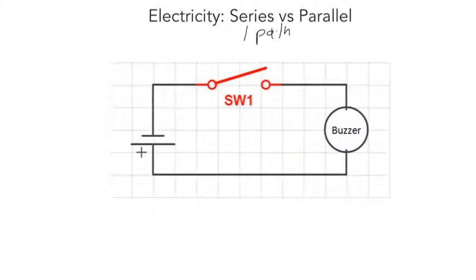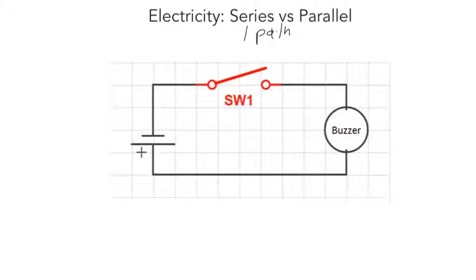Series circuits tend to be quite simple in the sense that you're not going to have lots of elements plugged into a series circuit, simply because there's only one path. All of the elements in a series circuit are just going to be following one another, whereas in a parallel circuit you can have multiple paths, making the circuit not only much bigger but more complex.